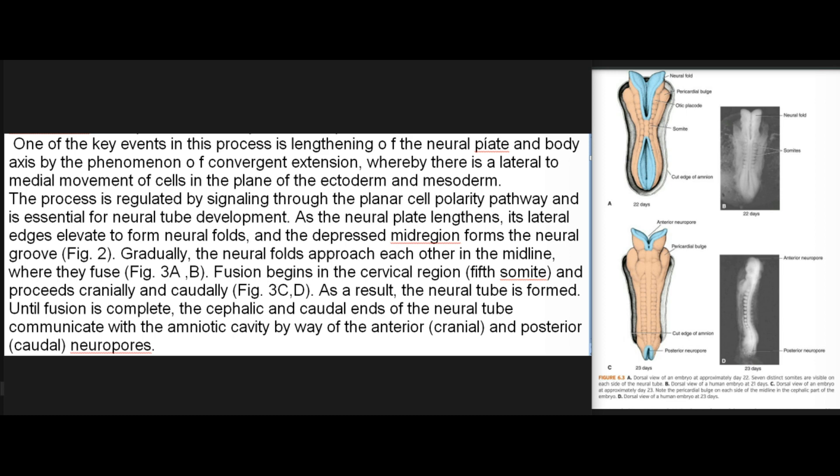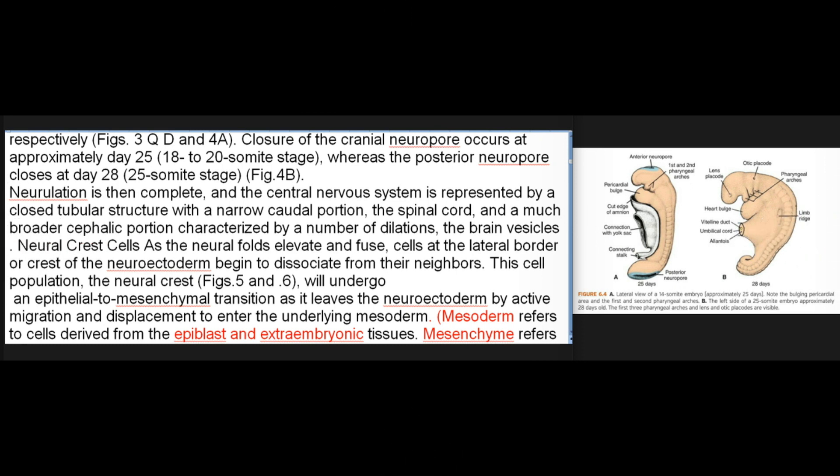Until fusion is complete, the cephalic and caudal ends of the neural tube communicate with the amniotic cavity by way of the anterior (cranial) and posterior (caudal) neuropores, respectively. Closure of the cranial neuropore occurs at approximately day 25 (18–20 somite stage), whereas the posterior neuropore closes at day 28 (25 somite stage). Neurulation is then complete, and the central nervous system is represented by a closed tubular structure with a narrow caudal portion — the spinal cord — and a much broader cephalic portion characterized by a number of dilations.